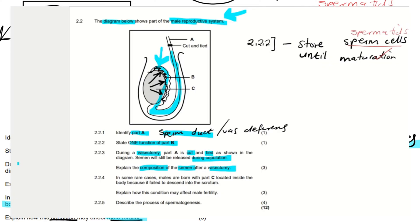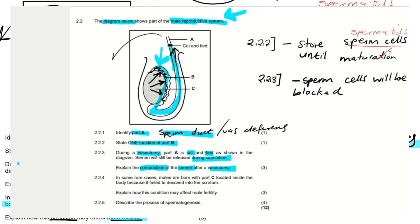Semen will still be released during copulation. This is a three-mark question. Because we are cutting part A, the sperm cells will be blocked from moving all the way from the epididymis to reach the urethra. So the sperm cells will be blocked.